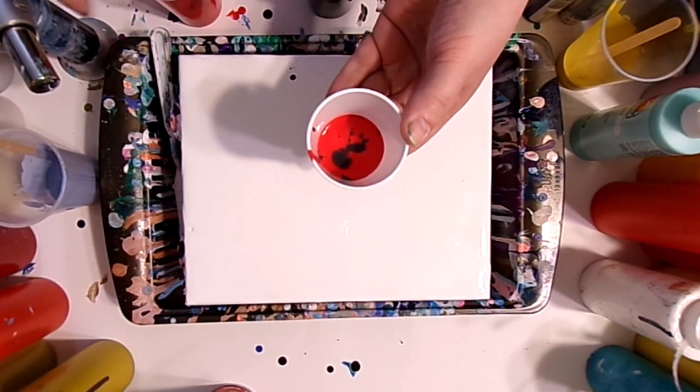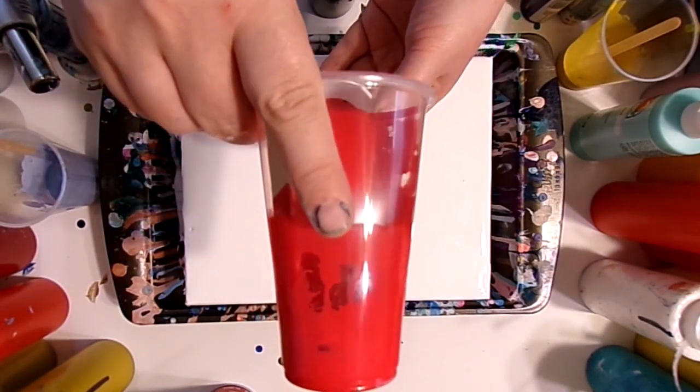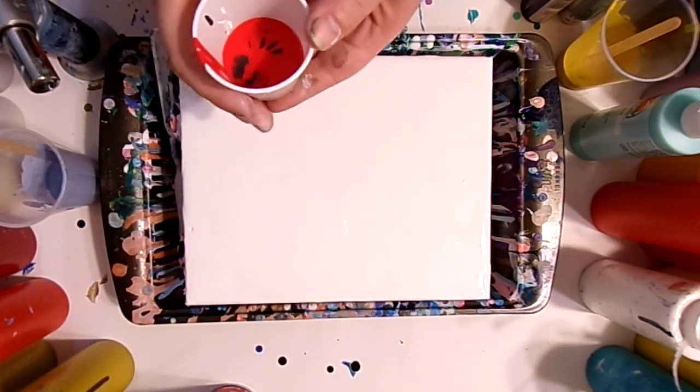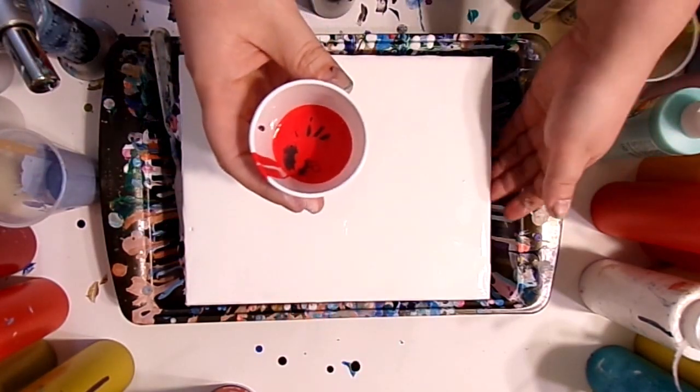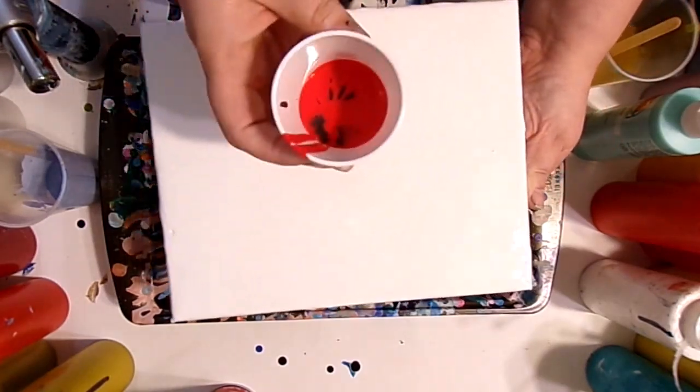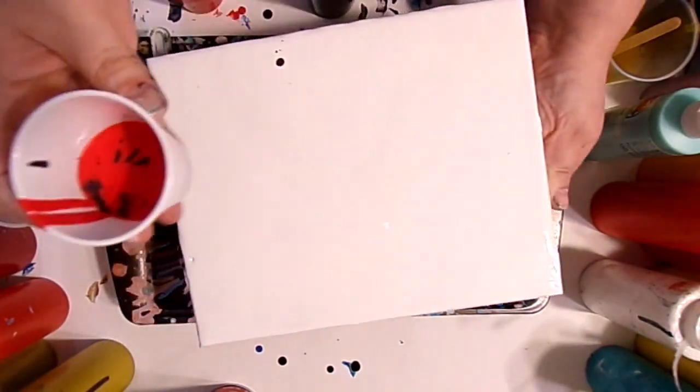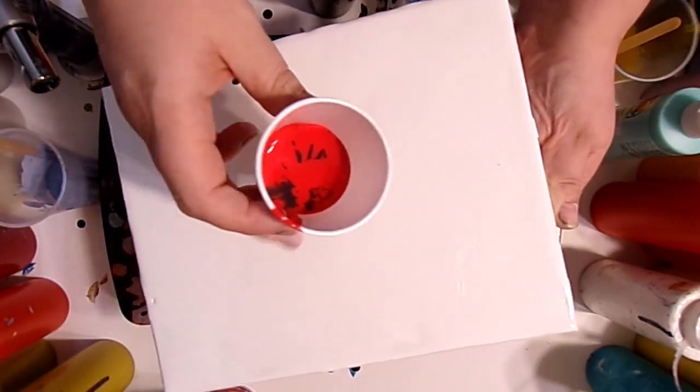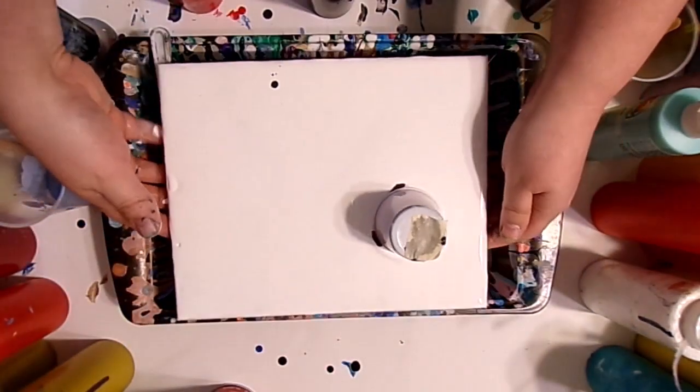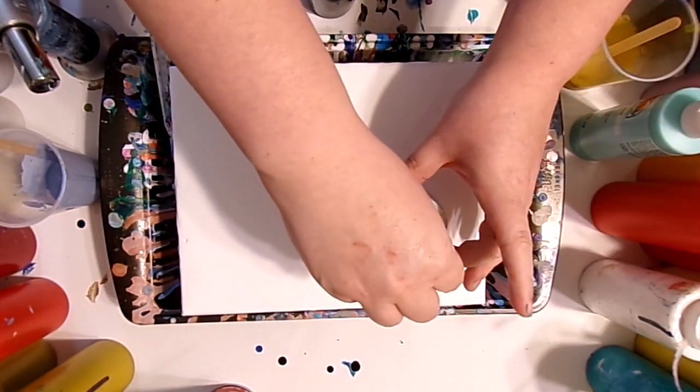You really don't need too much, just about a third of the cup. Now we're going to do a flip cup, but it is a little bit tricky because we already have the surface flooded with the white. We're going to do this flip cup and now we're going to carefully take the tape off.